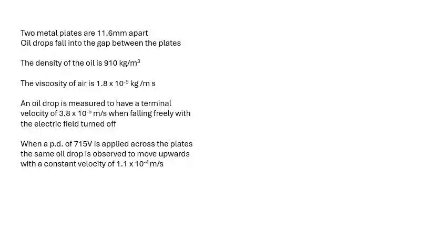Now there's different ways of doing this. Look at these numbers. First of all, two metal plates 11.6 millimeters apart. Remember I said they're pretty close together, 11.6 millimeters, just over a centimeter. The oil drop falls in the gap between the plates. The density of the oil we know, 910 kilograms per meter cubed. It's all done at constant temperature, all very controlled. By the way, Millikan was very careful about this. The viscosity of the air at a particular temperature is 1.8 × 10⁻⁵ kilogram per meter second.